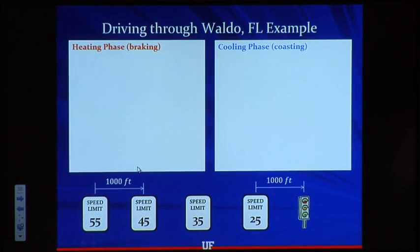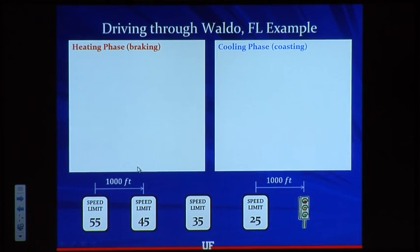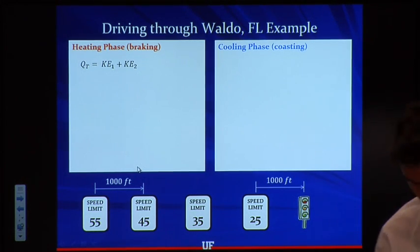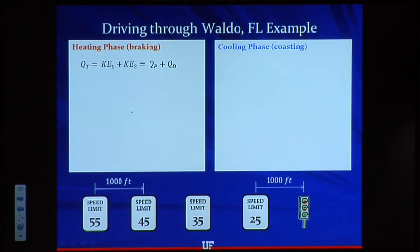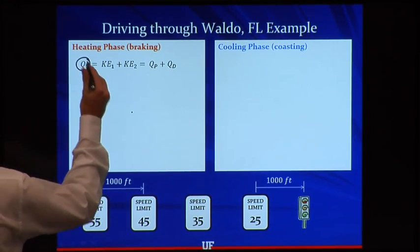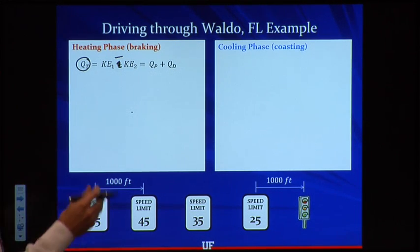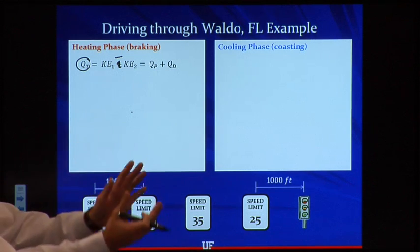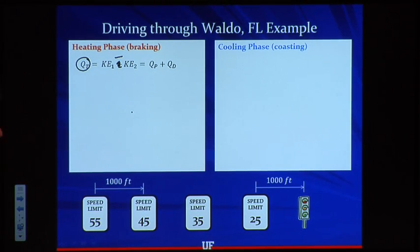For the heating phase — that's when we're hitting the brake — the brake distance is 100 feet. The amount of heat generated for each braking event is the change in kinetic energy: KE₁ minus KE₂, based on initial and final velocity. That quantity equals the amount of heat generated in the pad, Q_P, plus the amount of heat generated in the disk, Q_D.